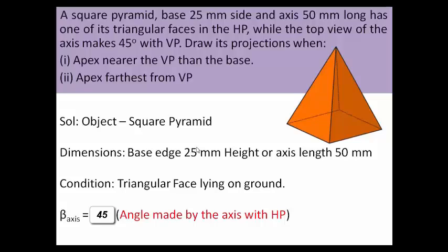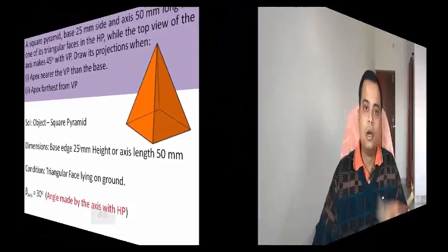In the next section I'll show how the object has been kept with the help of a demonstration. This is the square pyramid we're considering. I'll give you a perspective view from the top, showing how this object is kept with respect to the horizontal and vertical planes.